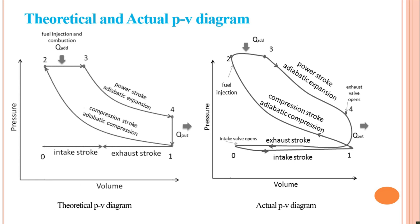The burnt gases can be expelled to the atmosphere from the cylinder only if the exhaust gases (one to zero) have higher pressure than atmospheric pressure. Additionally, there will be heat and pressure losses during the compression and expansion processes, which is why the process does not follow the isentropic assumption.